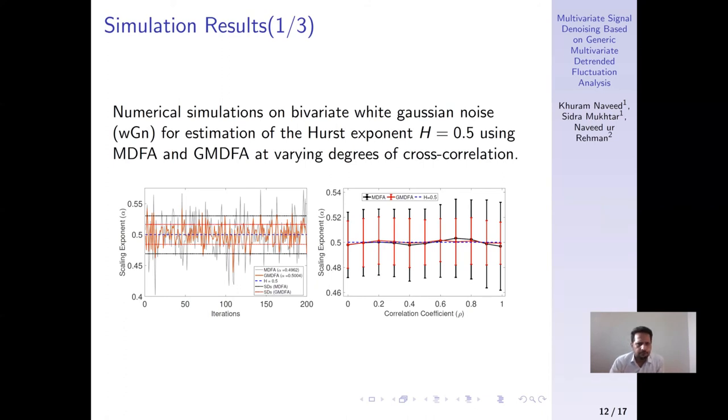Now we demonstrate a few simulation results to validate the performance of our methods. Firstly we compare the performance of GMDFA against the existing multivariate DFA. On the left side we plot the first 200 iterations of both methods where it is clear that GMDFA not only has a much lesser standard deviation but its simulations are much closer to the central blue line that is ground truth compared to the other method.